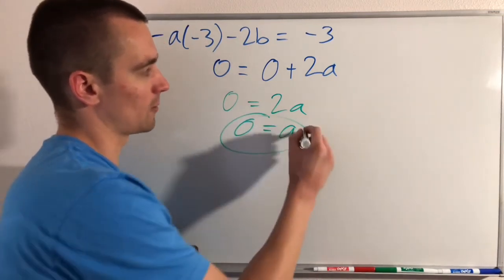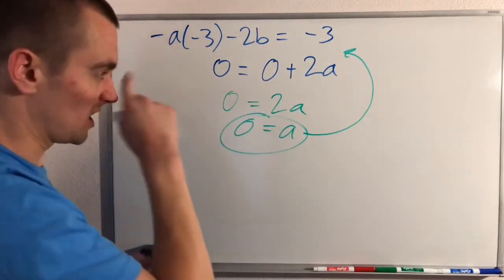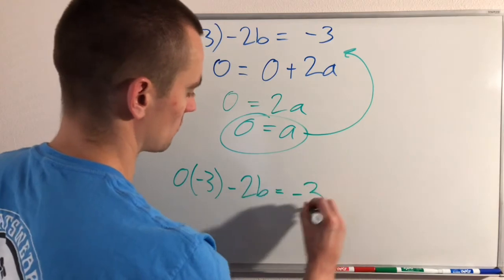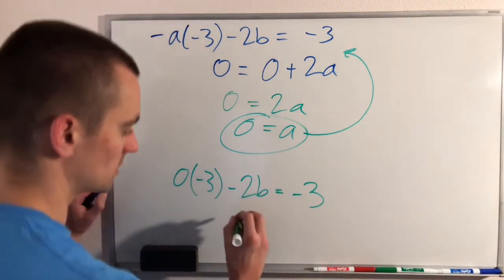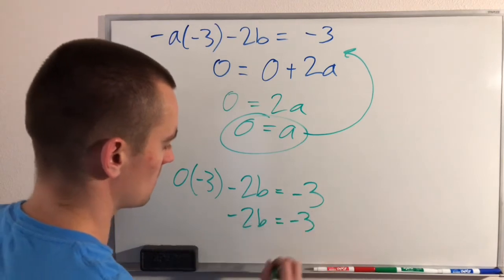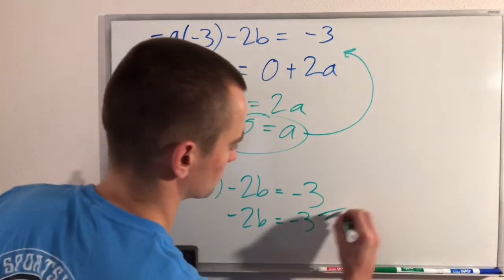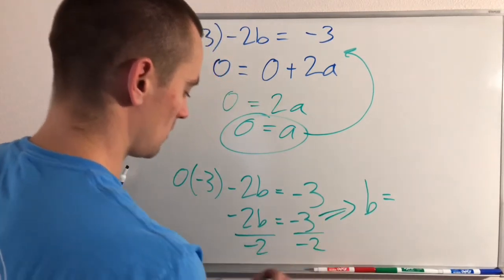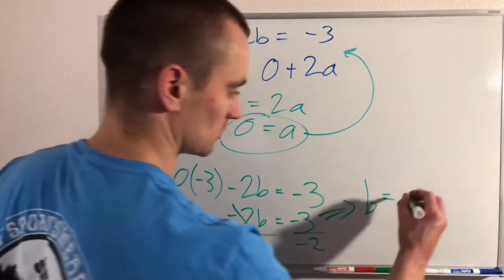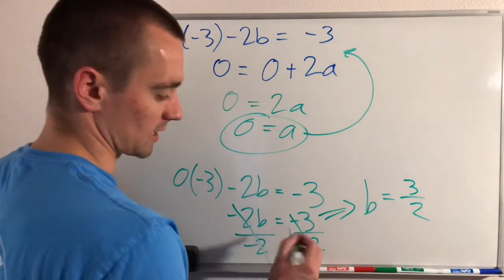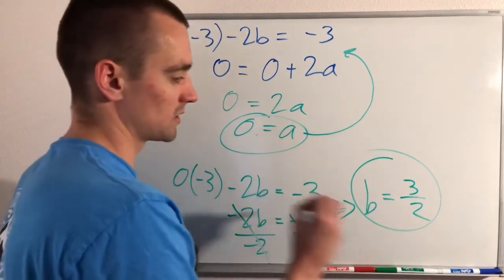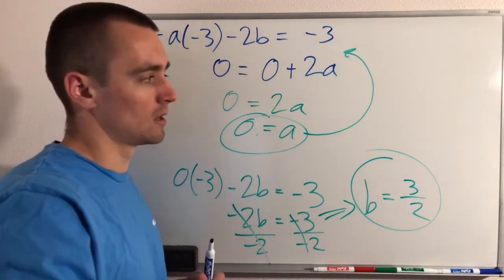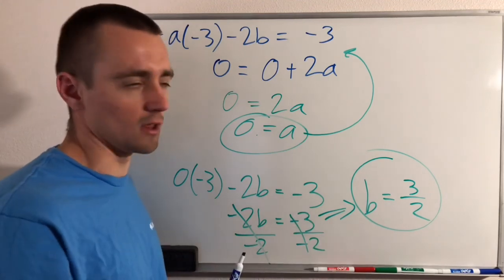Now we can take a equals 0 and plug it into our first equation. That gives us 0 times negative 3 minus 2b equals negative 3. 0 times negative 3 is 0, so negative 2b equals negative 3, which tells us b equals negative 3 divided by negative 2. The negatives cancel, so b equals 3 over 2. Therefore, a equals 0 and b equals 3 halves will make the piecewise function continuous on negative infinity to infinity for all x values.